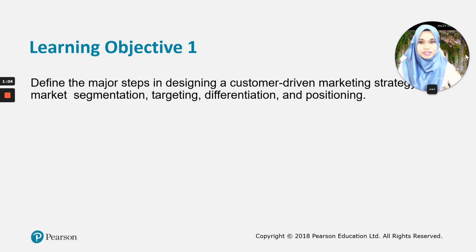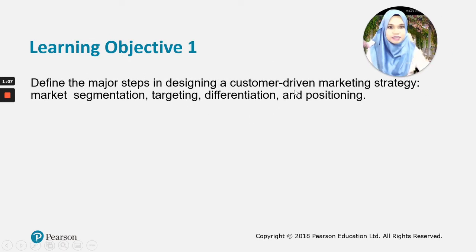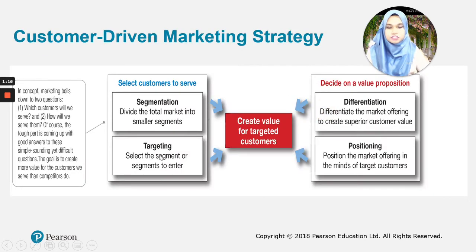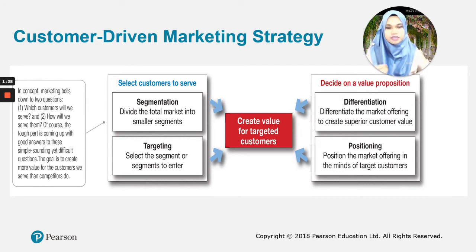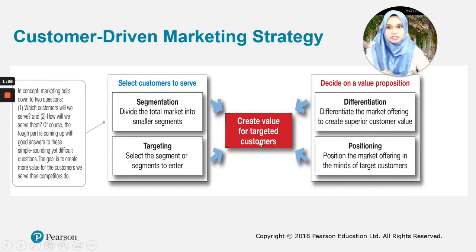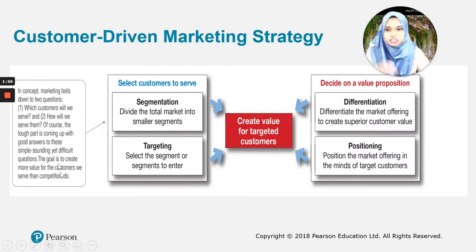The second objective is to discuss the major bases of segmenting consumer and business markets. Third, to explain how companies identify attractive market segments and choose a market targeting strategy. Lastly, we'll discuss how companies differentiate and position their products for maximum competitive advantage. Let's get started with the first learning objective. Every company wants to create value for their targeted customers, and marketing boils down to two questions: which customers will we serve, and how will we serve them?